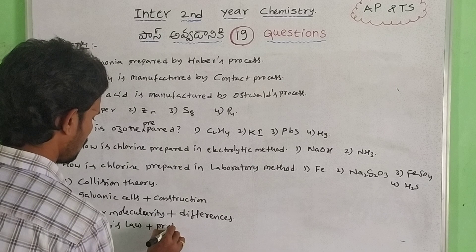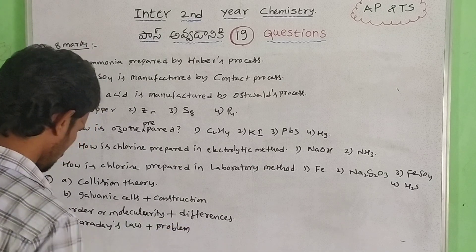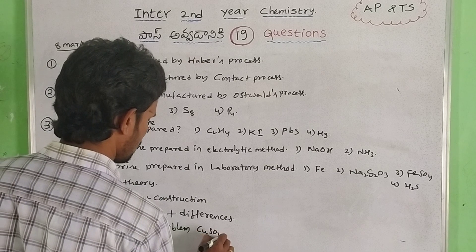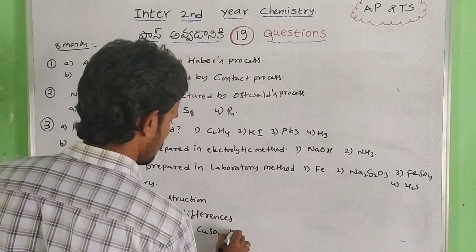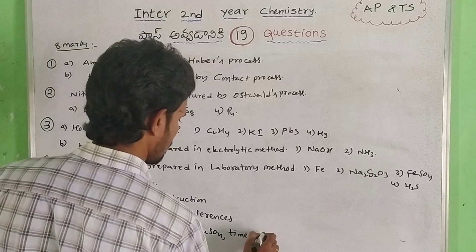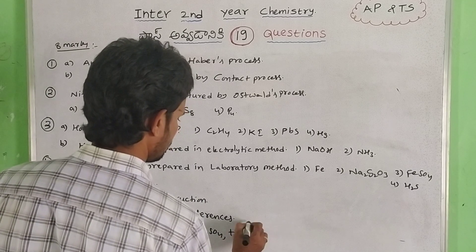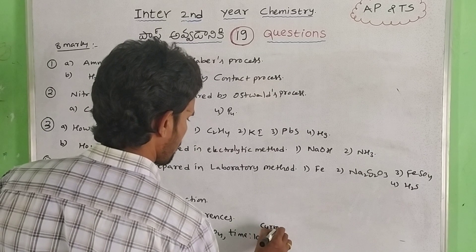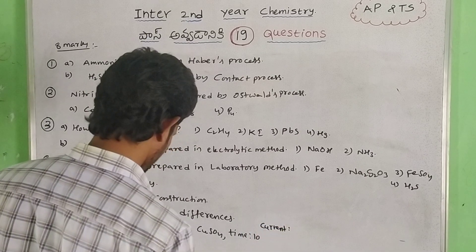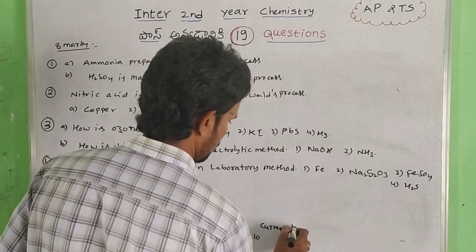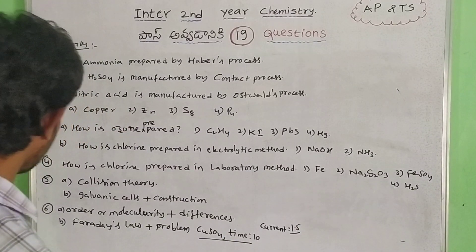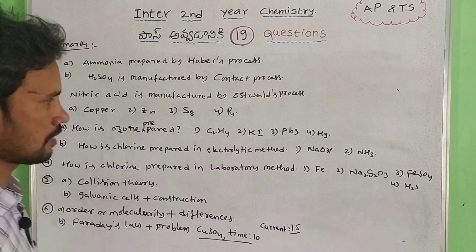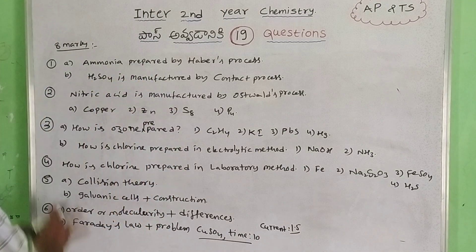Problems are not too much. CuSO4, time is 10 minutes, current is 1.5 A — these are the types of Faraday's law problems. When you do notes, write these down. Start to see the 4-mark questions.